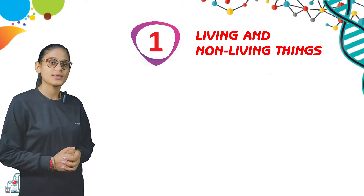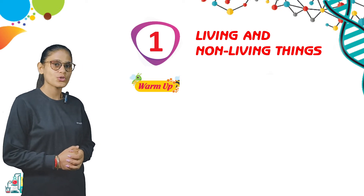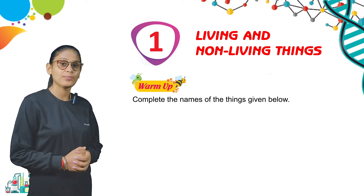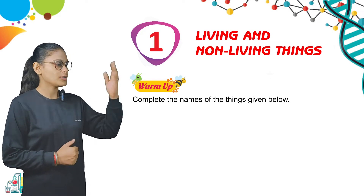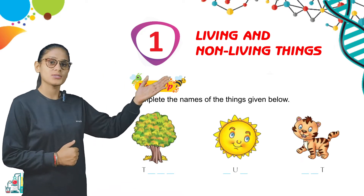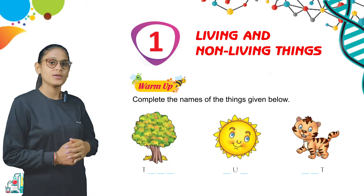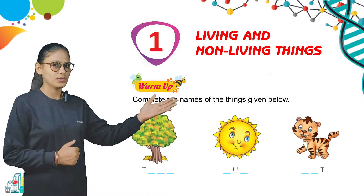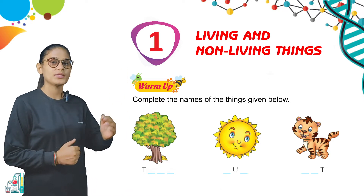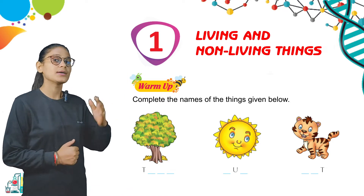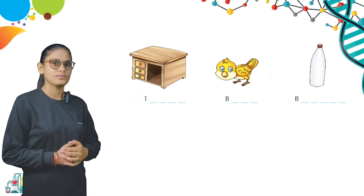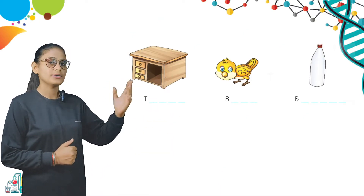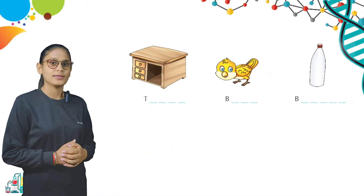Here are some warm-up questions: complete the name of the things given below. The first picture is a tree and the second one is the sun. The third picture is a cat. Next is a table, then a bird, and the last one is a bottle.